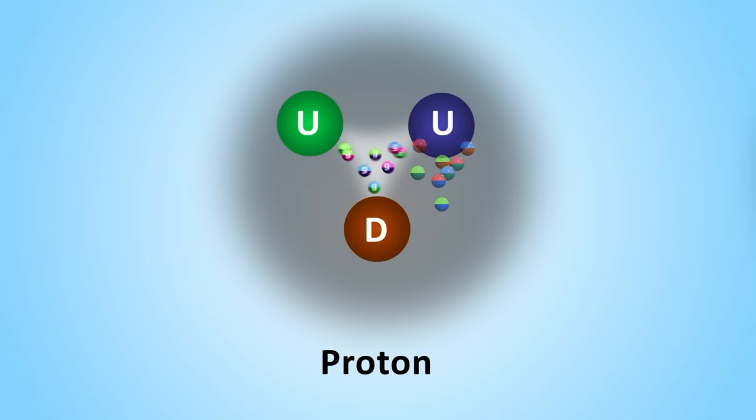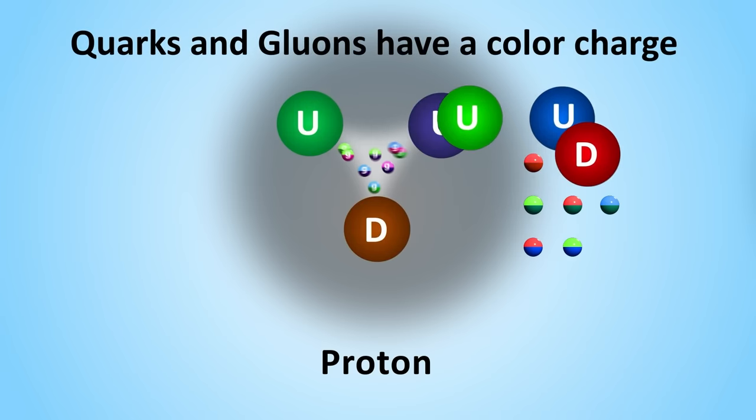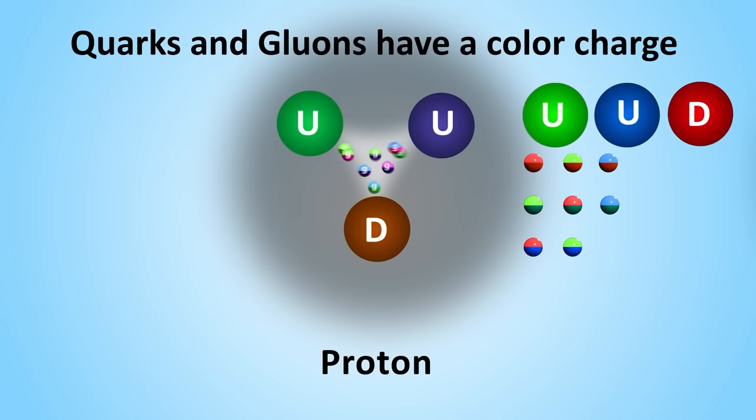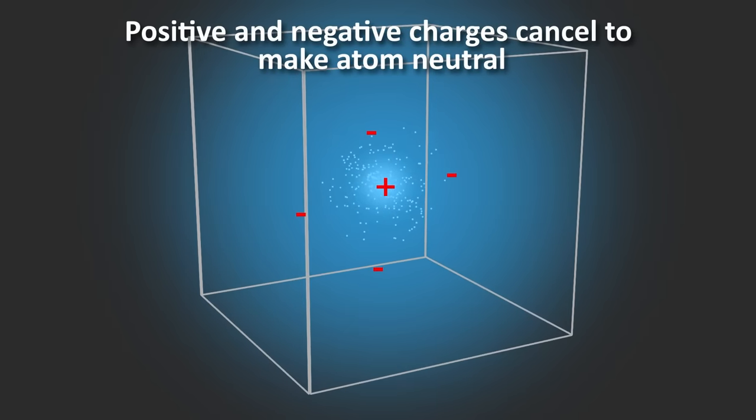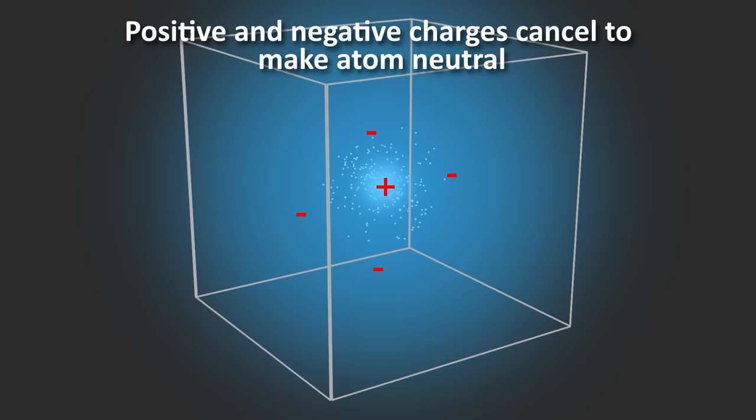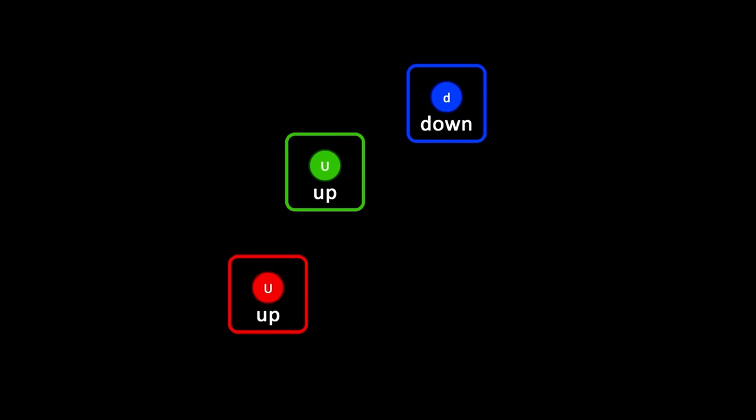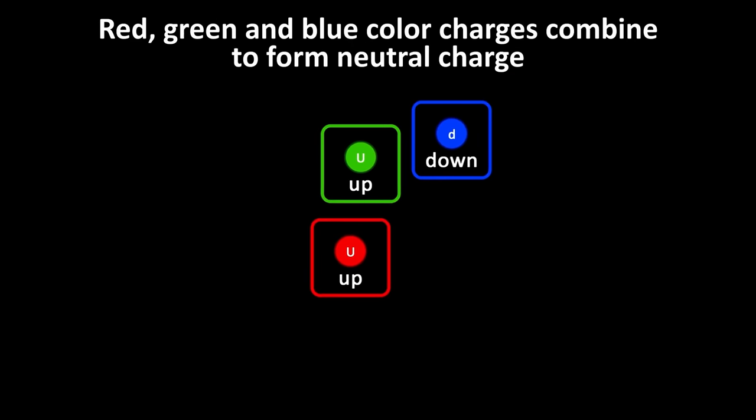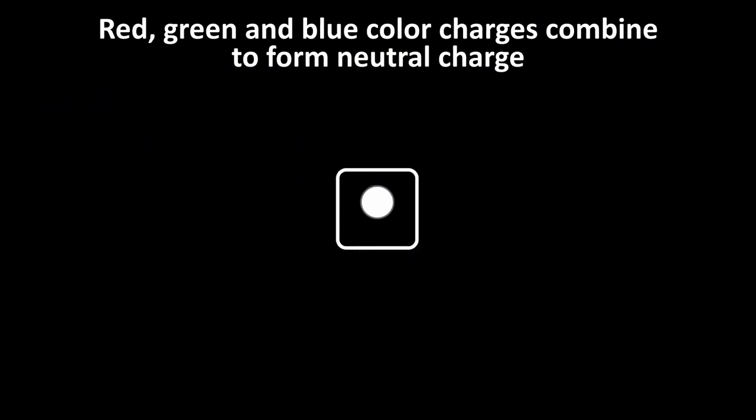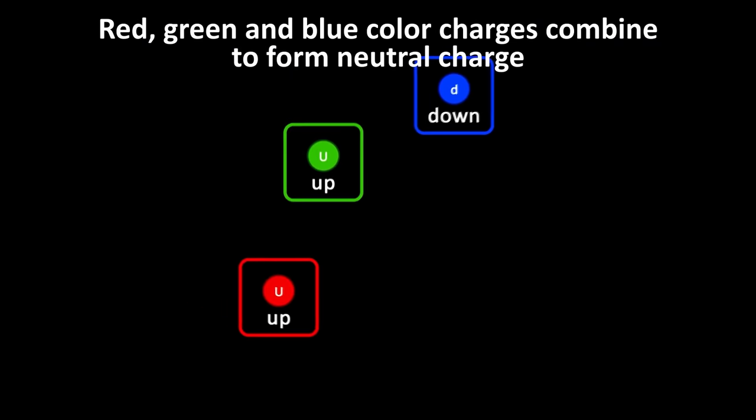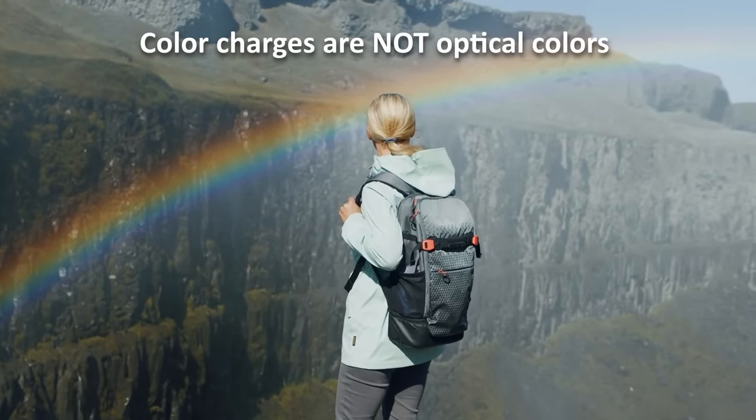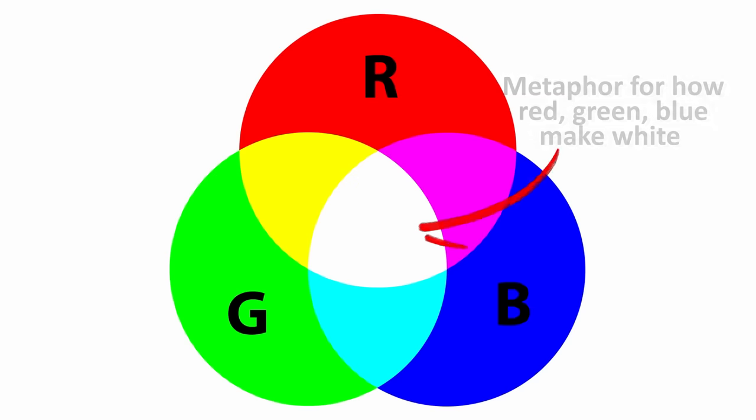Well, gluons bind quarks together and both have a kind of charge called the color charge. This charge is how the strong force operates. It's somewhat analogous to an electrical charge, where a negatively charged electron, for example, surrounding a positively charged proton makes the atom neutral. With quarks, however, we're dealing with red, blue, and green color charges that combine to form a neutral color. Now I want to point out that these are not literally optical colors. But we use the term color charge because this charge, metaphorically speaking, works similarly to the way red, blue, and green optical colors can combine to form a neutral, or white color.